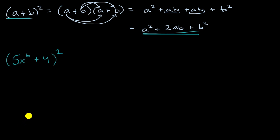Well, there's several ways you could approach this. You could just expand this out the way we just did, or you could recognize this pattern that we just established, that if I have a plus b and I squared it, it's going to be this. And so what you might notice is, the role of a is being played by 5x to the sixth right over there, and the role of b is being played by 4 right over there.